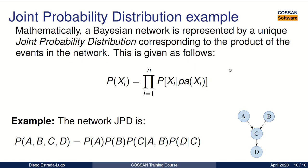So the way to represent mathematically a Bayesian network is through the use of a joint probability distribution, which corresponds to the product of the events in the network. As we can see in this formula, the probability of an event Xi, conditioned to the probability of its parents, is multiplied n times, where n is the number of nodes in the network.